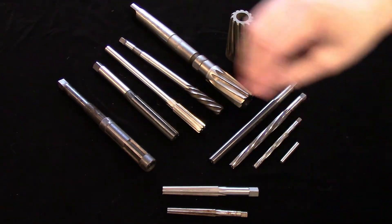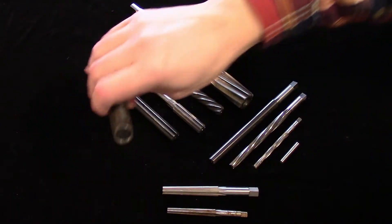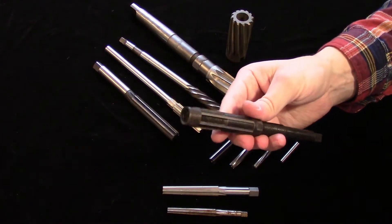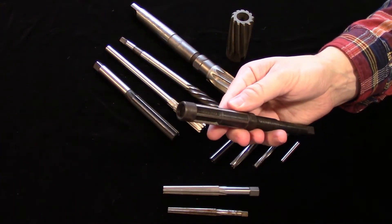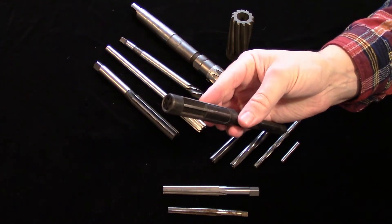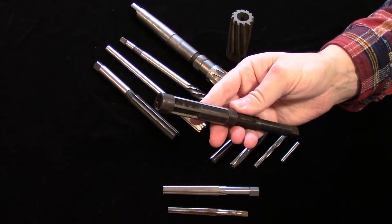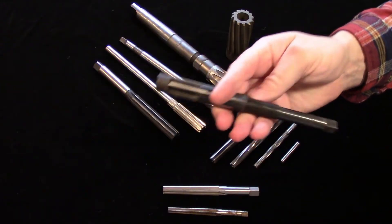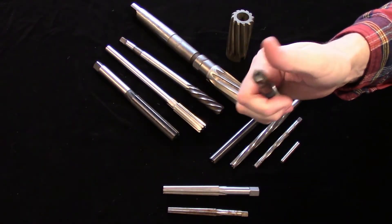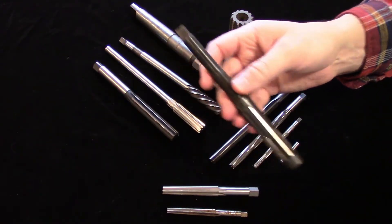There are also adjustable reamers, which use opposing nuts to slide the reamer blades in tapered channels to make the reamer larger or smaller. These are always hand reamers, and the surface finish they create leaves a lot to be desired. These are mostly used to open a hole slightly rather than trying to get a precise fit.